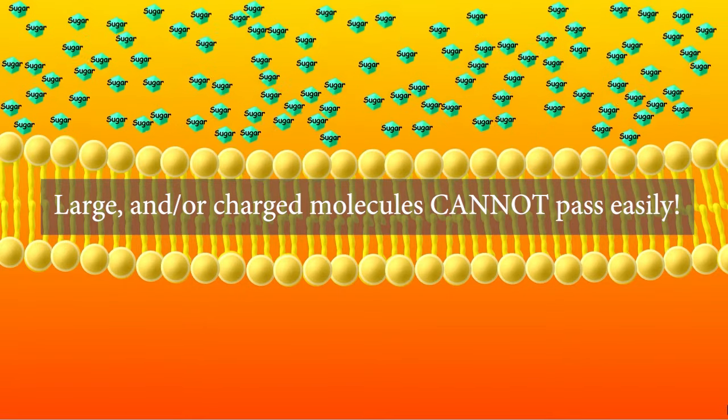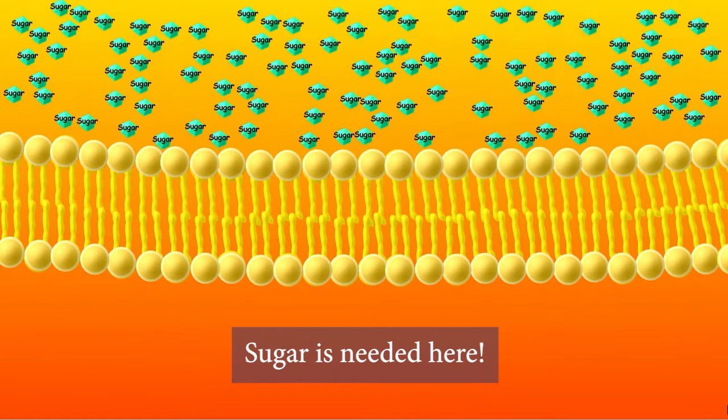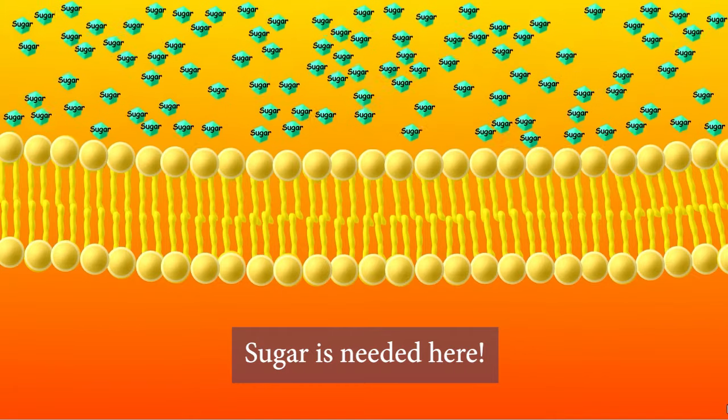This creates a potentially disastrous problem. The cell needs sugar. Without sugar, the cell will die. How is this problem solved?